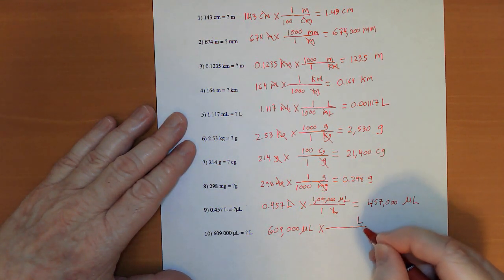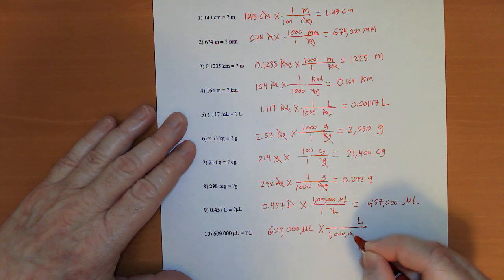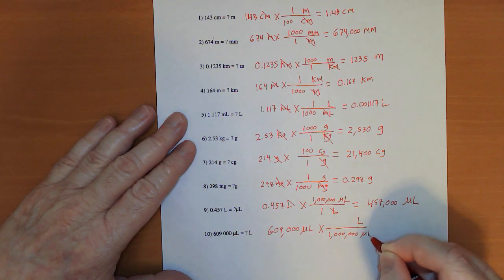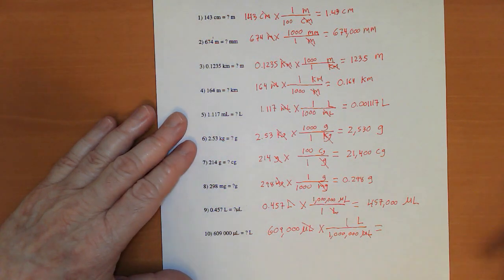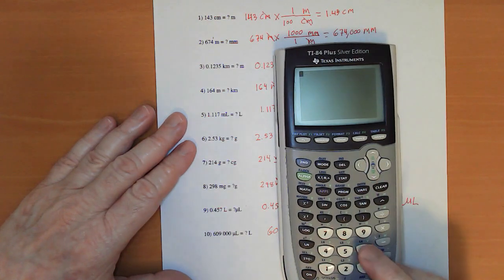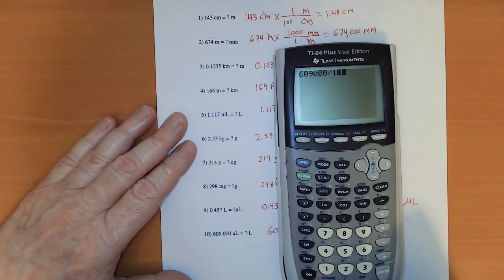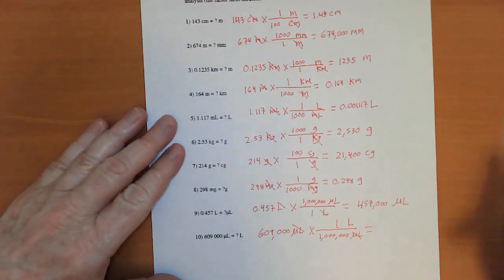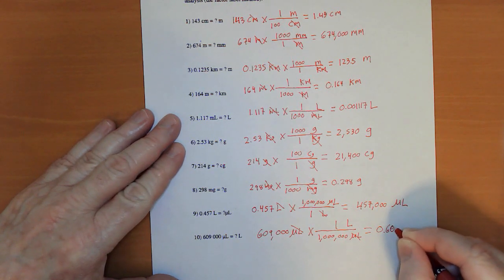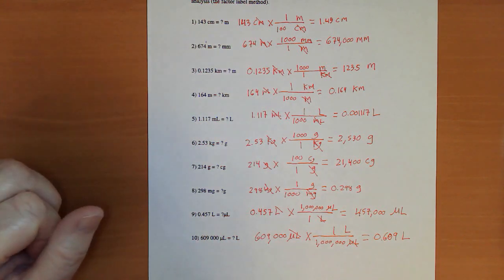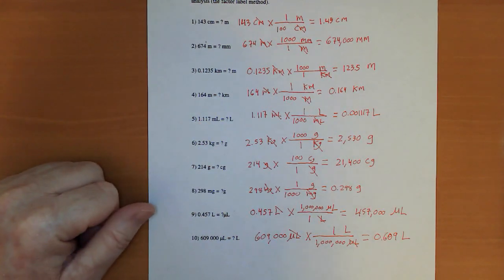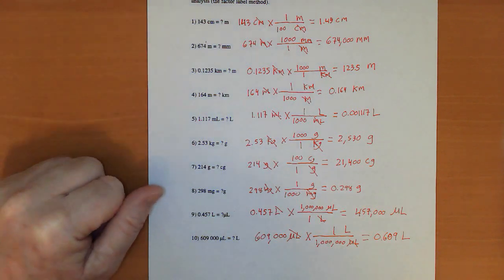609,000 micro liters times. We want to get to liters. So, we'll do 1,000,000 micro liters on the bottom. Micro cancels. If the big numbers bother you, don't worry. Use your calculator. Boom. 0.609.